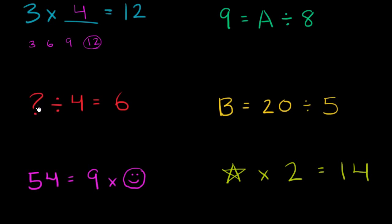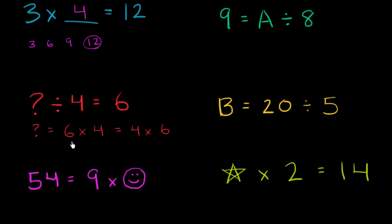Now let's work on this one. Question mark divided by 4 is equal to 6. Well, this is the same thing as saying that question mark is equal to 4 times 6, or 6 times 4 — they're the same. So what is 6 times 4? 6 times 1 is 6, 6 times 2 is 12, 6 times 3 is 18, 6 times 4 is 24. So question mark must be equal to 24.